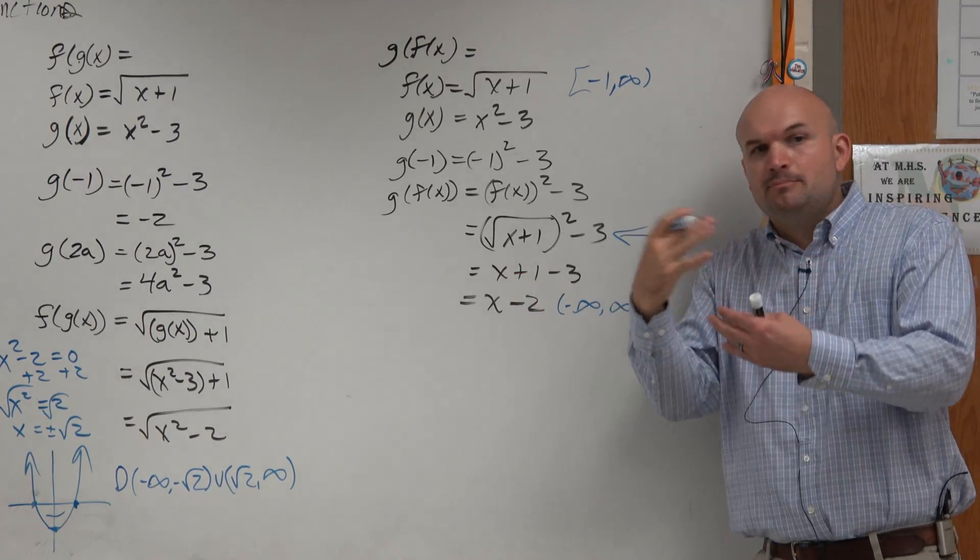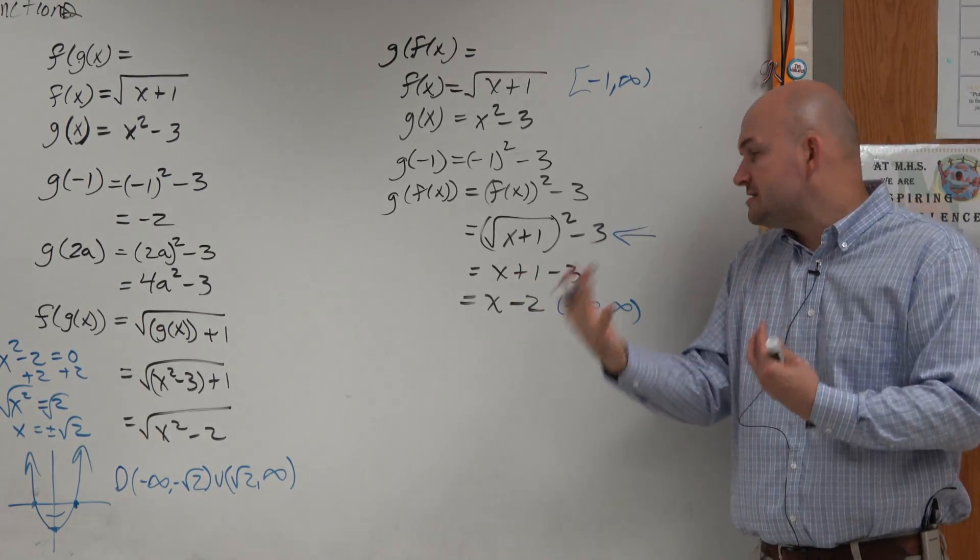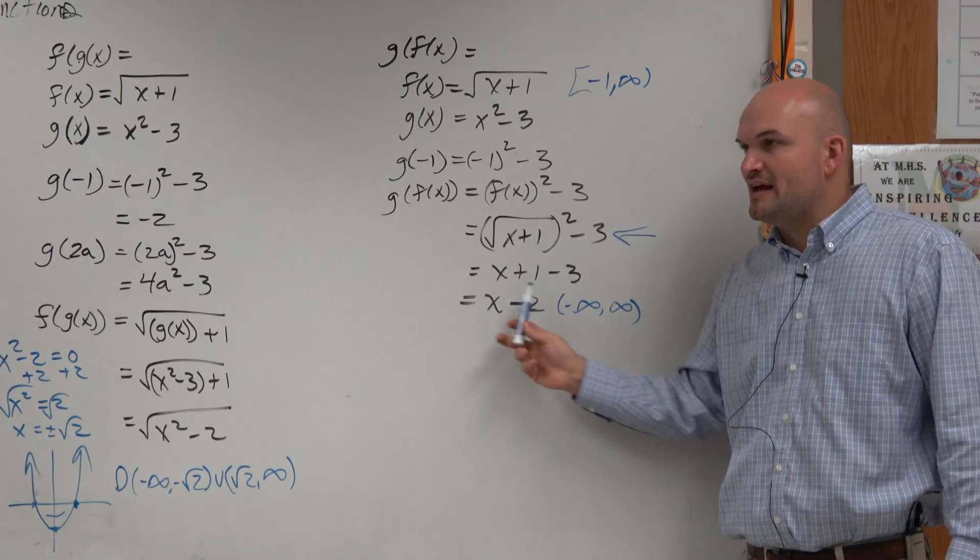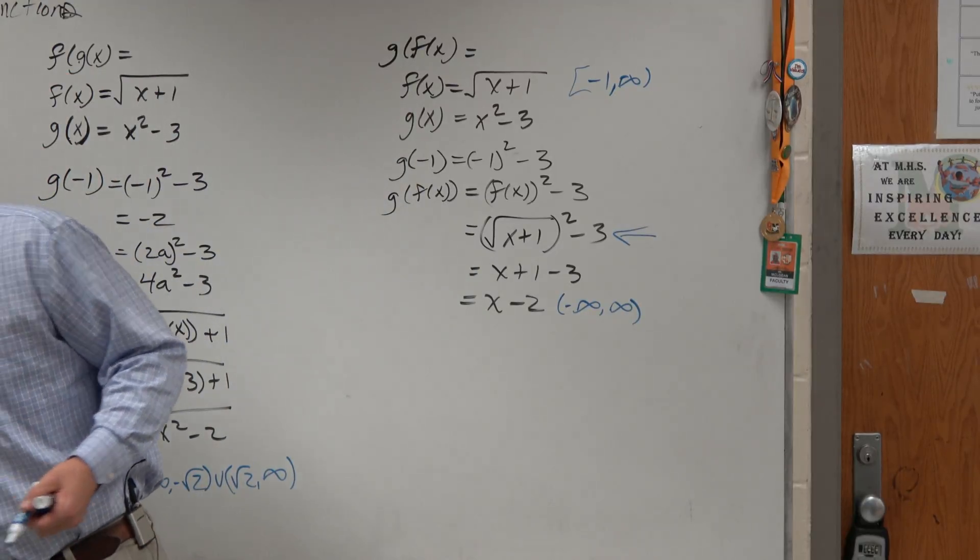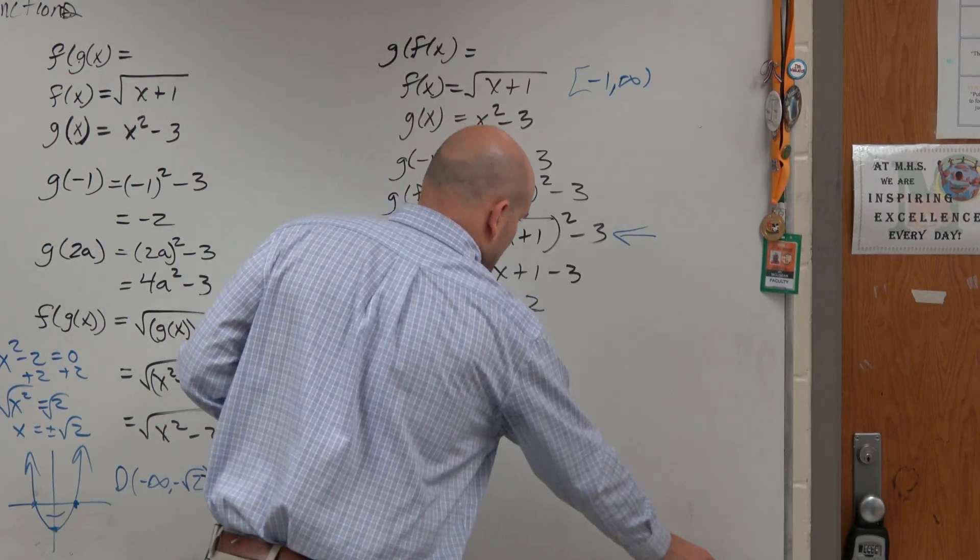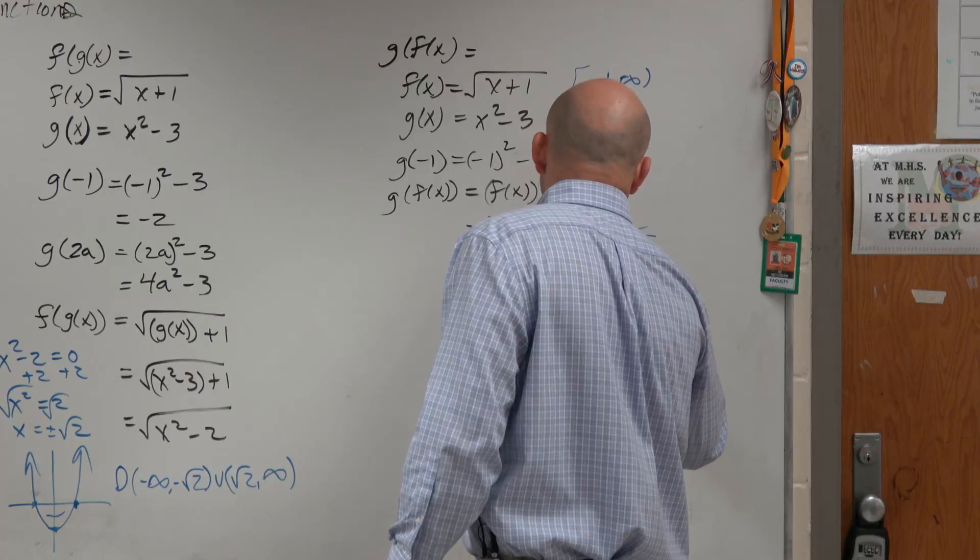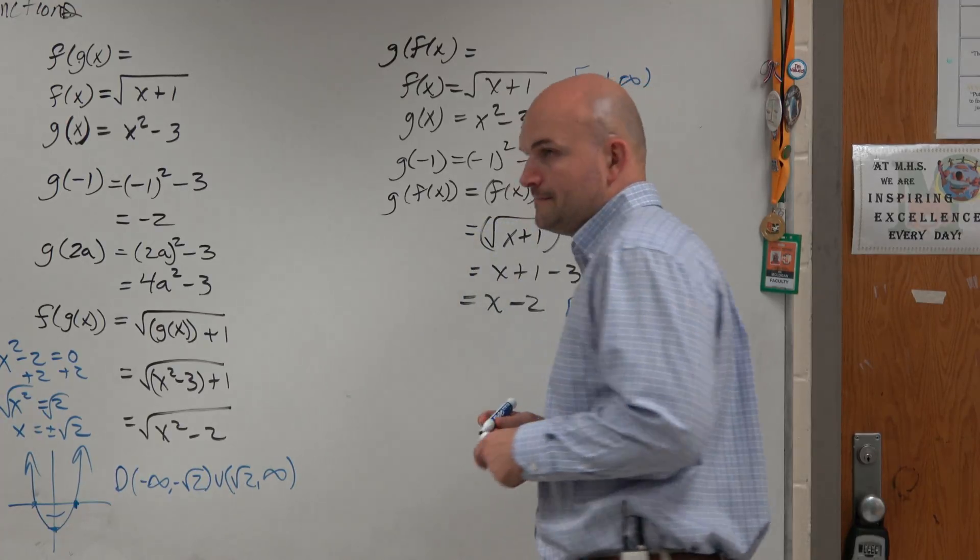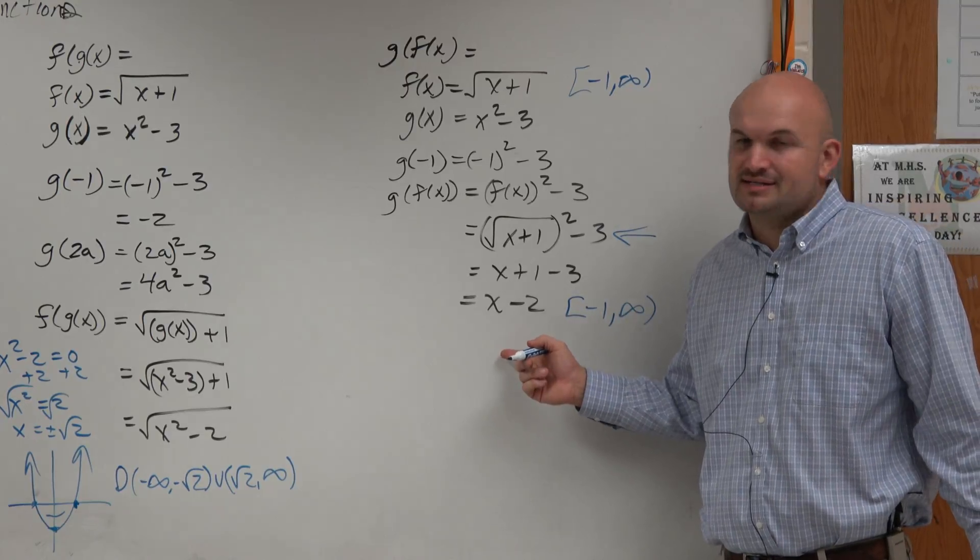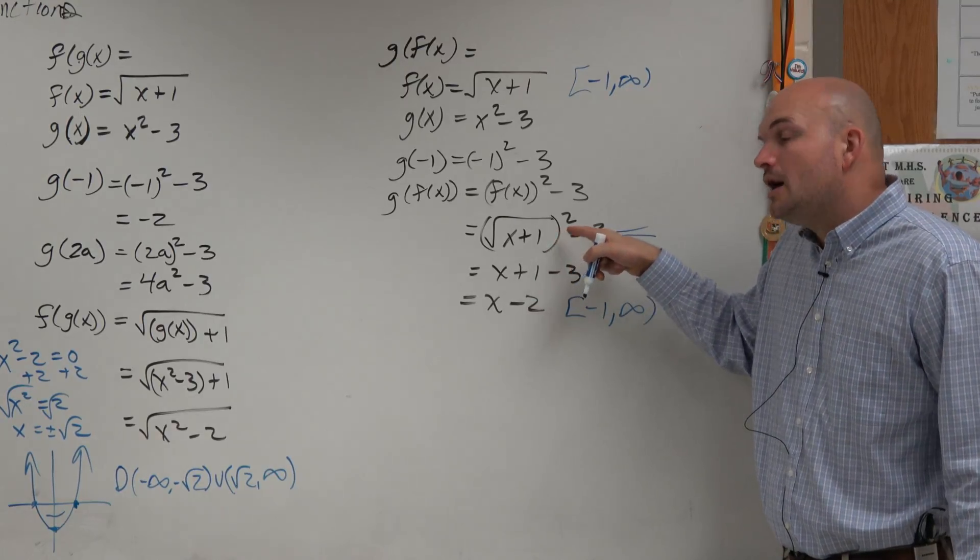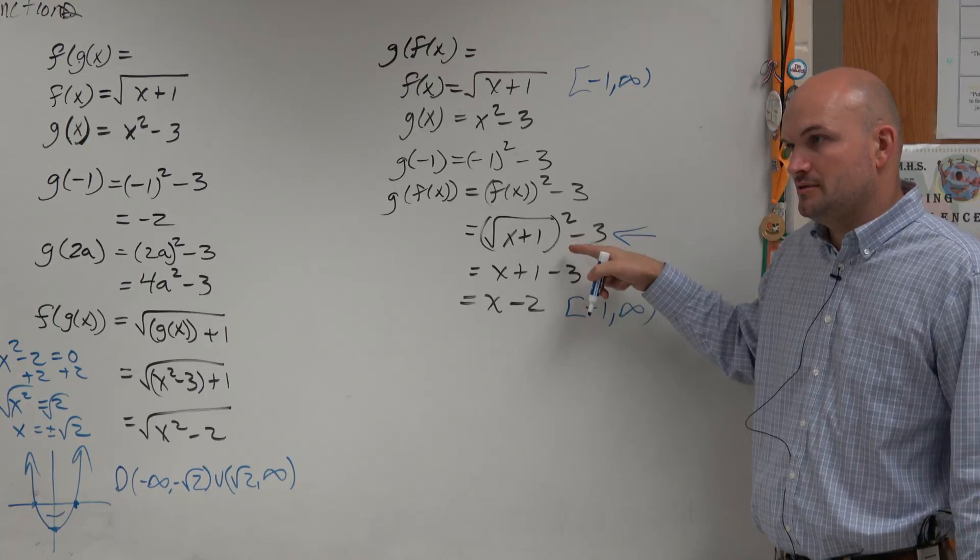But what happened is I just simplified it. I just algebraically simplified this so I don't have to do any more operations. But we can't just say the simplified version doesn't have any restrictions. Yes it does. It does have restrictions. It's restricted by negative 1 to infinity. But it's confusing if you just look at that and say that's a restriction, that doesn't make any sense. But if you look at that, oh yeah, that is the restriction. Or look at the original equation.